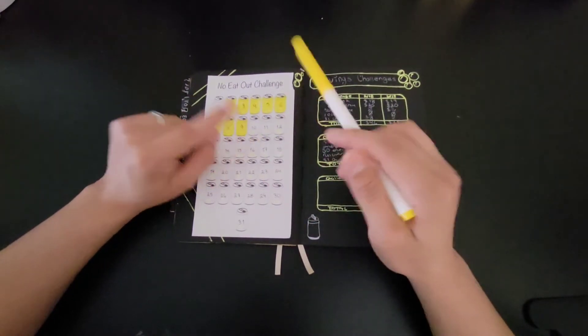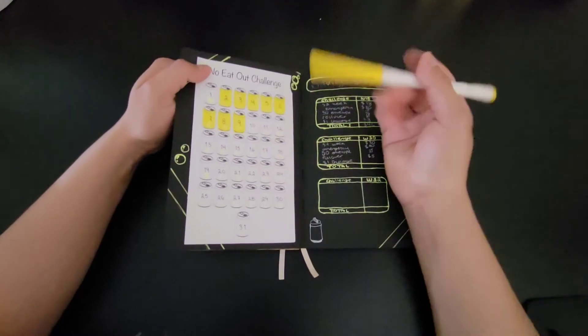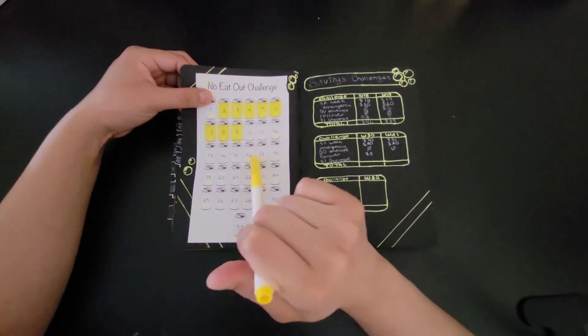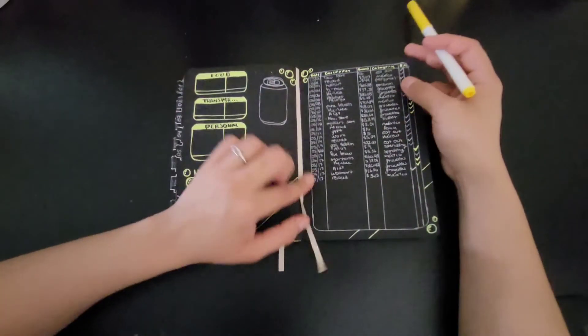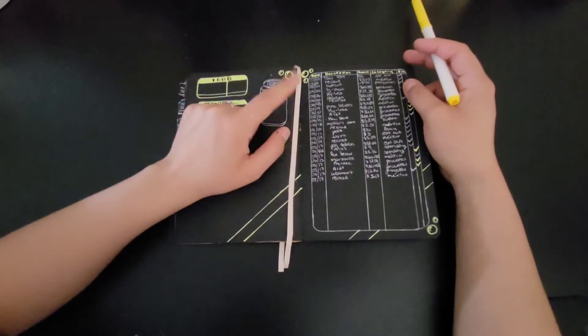And if I do not eat out then I get to color it, that's like a little reward I guess. Today we're doing from the 10th to the 16th. I have my expense tracker in here and I make sure that I update it.